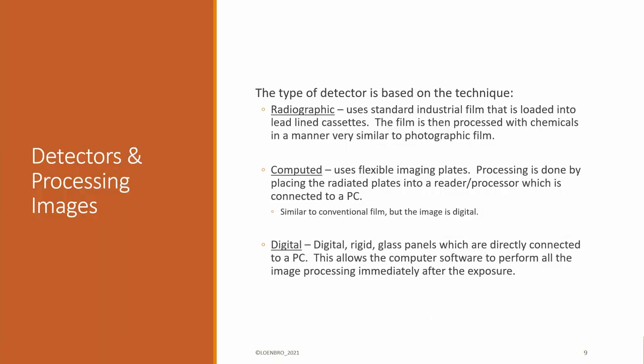So that's the basic sources of radiation and how the system works. As far as the detectors and processing, we touched on it a minute ago. Radiographic is your standard industrial film. The film is loaded into lead-lined cassettes. It's exposed to radiation. Then the processing is done. The chemical is very similar to the old photographic film days. Below probably the age of 20, which I doubt anybody on there is, you probably don't even know what photographic film is. But, again, process with chemicals, the actual film.